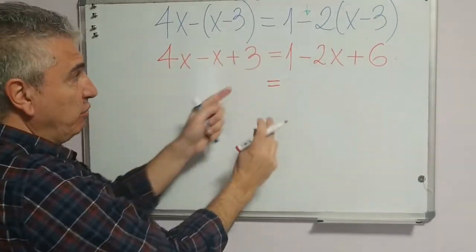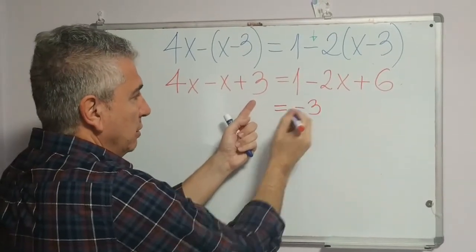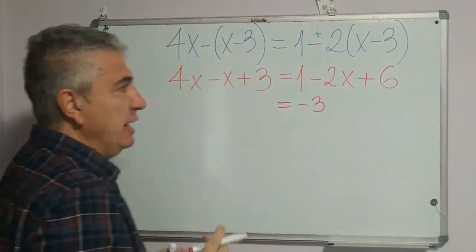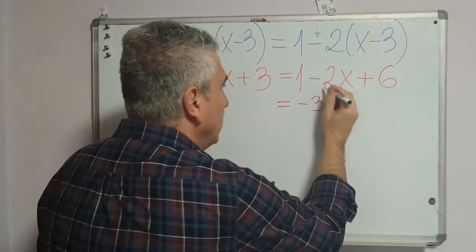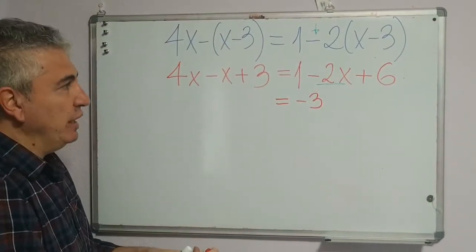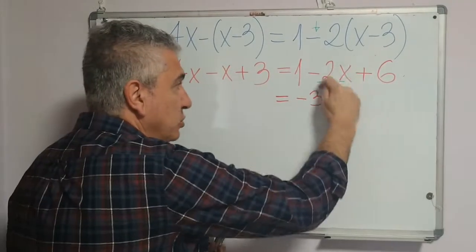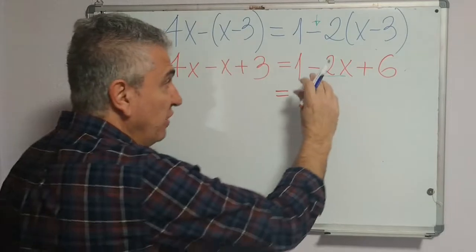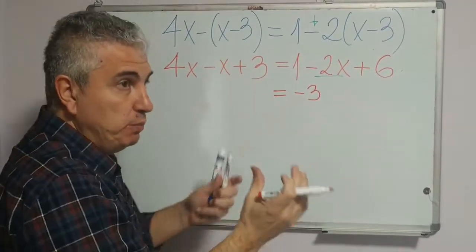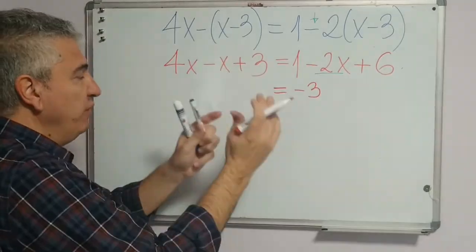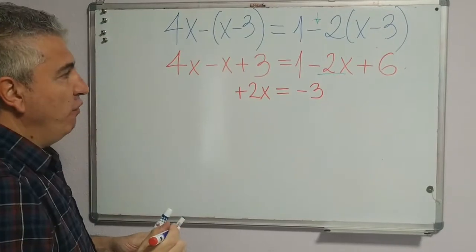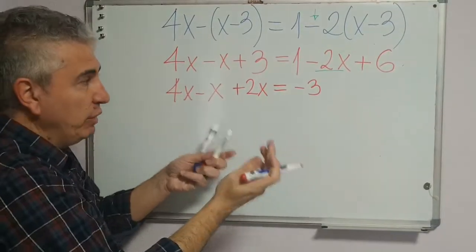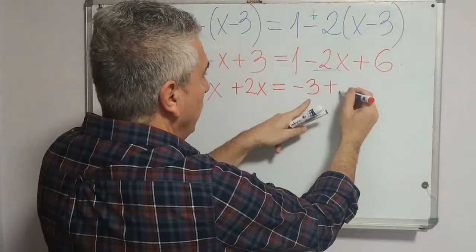We subtract 3 from both sides to eliminate the positive 3. To eliminate the negative 2x on the right, we add positive 2x — the opposite of negative 2x — to both members of the equation. So on the left we have 4x minus x plus 2x, and the 3 and negative 3 cancel out, leaving plus 1 plus 6.